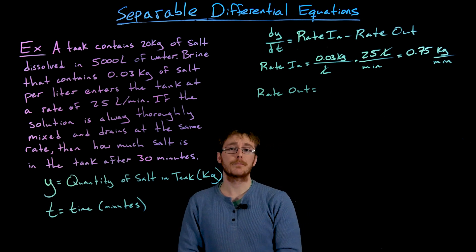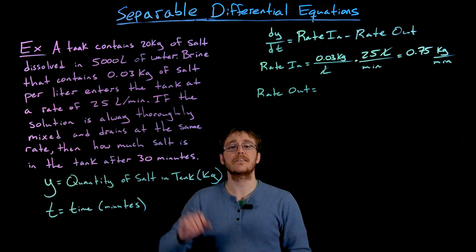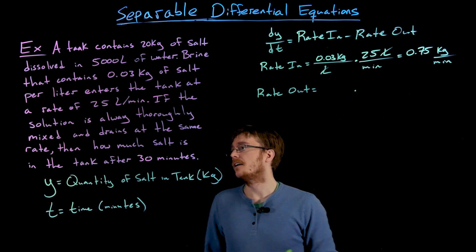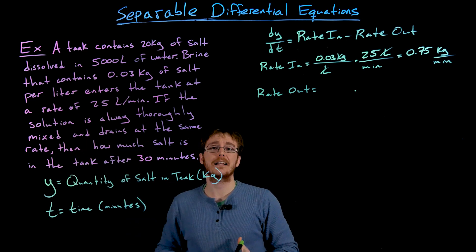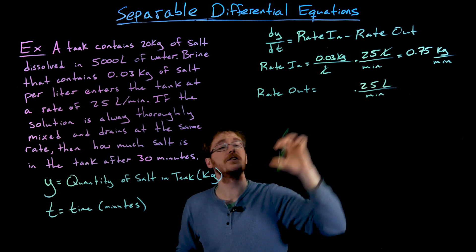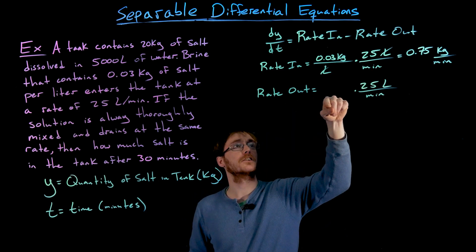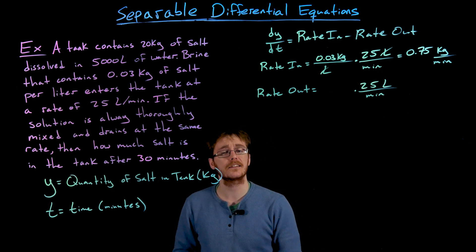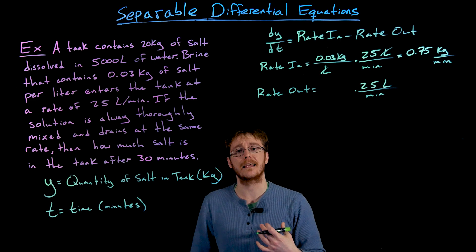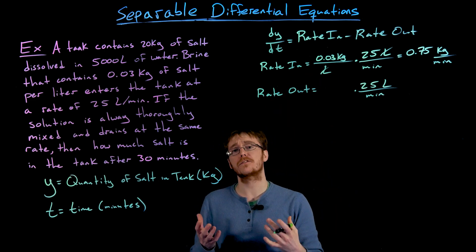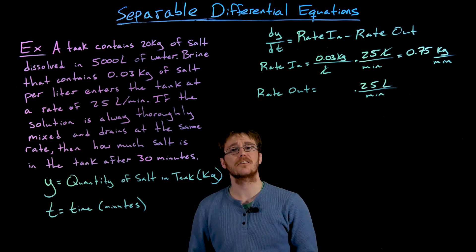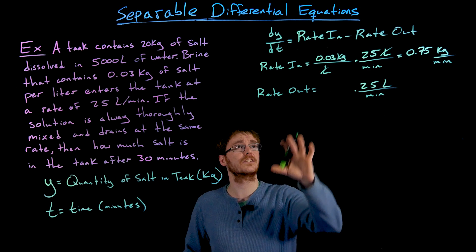Now we need to find the rate out, but this is trickier because we're not given that information explicitly — we'll have to describe it using a variable. We do know the solution leaving the tank is 25 liters per minute, the same as the inflow. The missing factor is the concentration of salt per liter in our tank, which is variable because introducing brine constantly changes the amount of salt already in the tank.